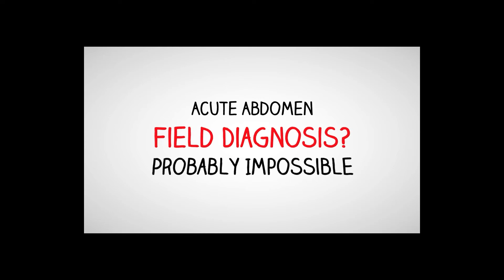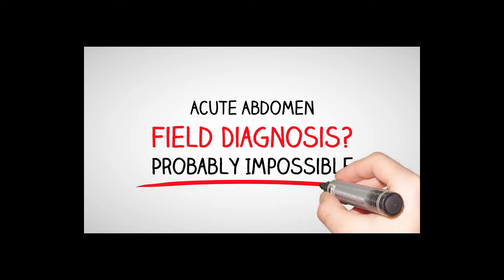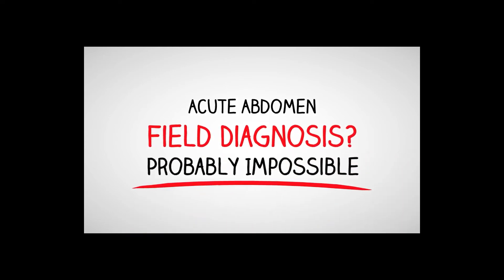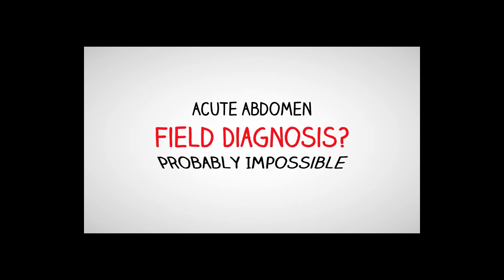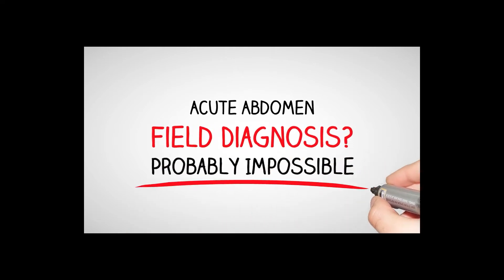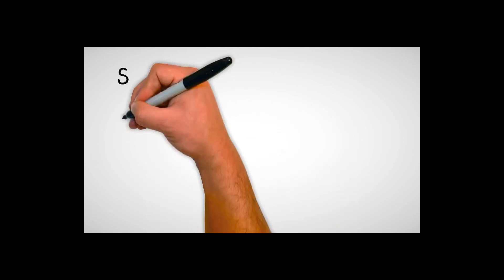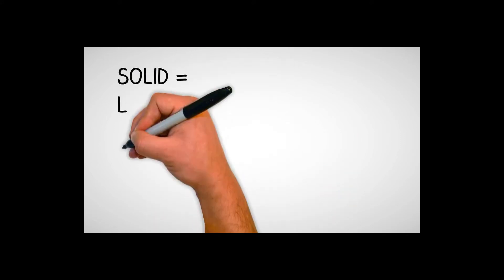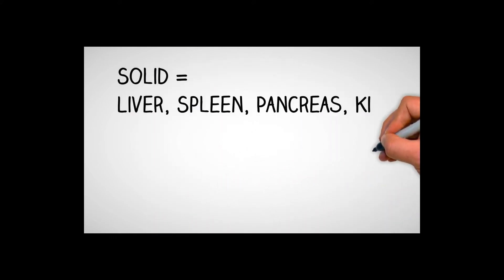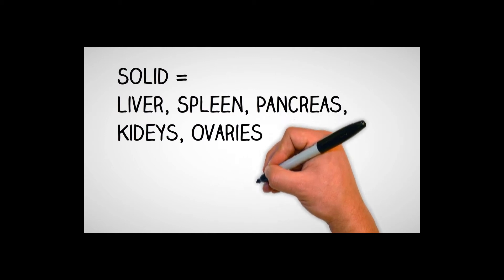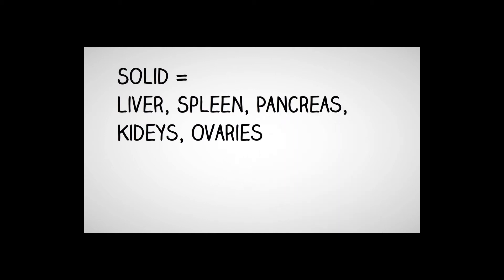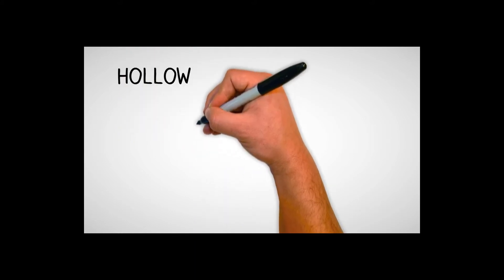Talking about abdominal emergencies and acute abdomen — it's hard to make a field diagnosis in the field, not necessarily necessary for you to do that, and probably impossible. But we still have to know it. So what are some of the solid organs? We've got our liver, the spleen, the pancreas, your kidneys, and your ovaries.